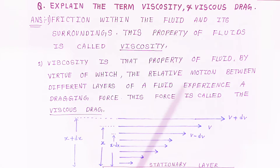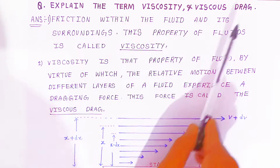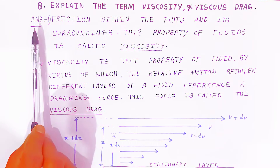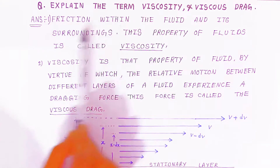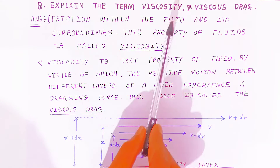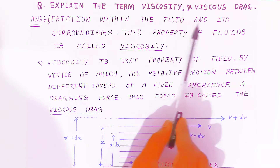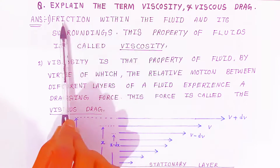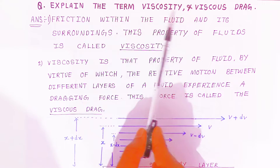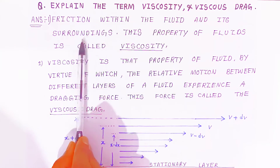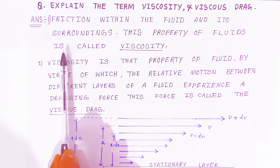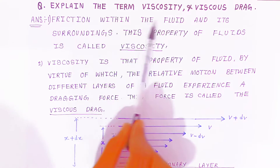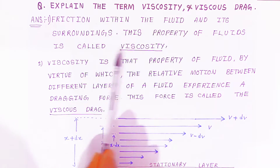One more question in examination: explain the term viscosity and viscous drag. First, what is viscosity? A friction within the fluid and its surroundings — that is, the wall of the tube. The friction within the fluid, meaning water with water, and with its surroundings — this property of fluids is called viscosity.